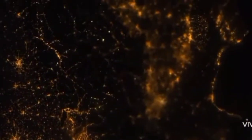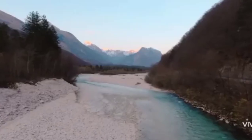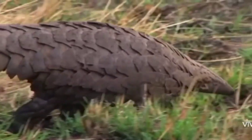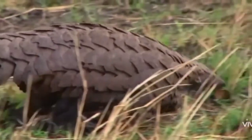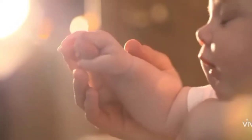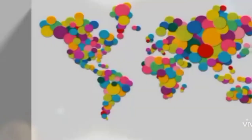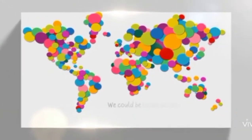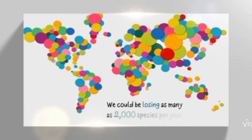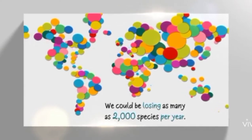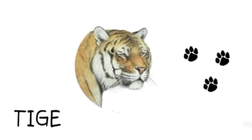When habitat changes, the species living there are impacted. Things like deforestation, water, light, and noise pollution, using too many natural resources, and species being captured and brought to places where they don't belong are all putting plants, animals, and humans in danger. Millions of species exist on earth, but scientific research tells us that as many as 2,000 species can be going extinct per year.